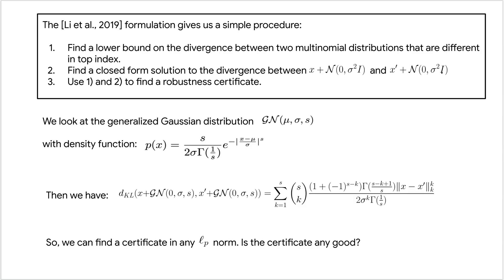In this work, we use the Li et al. approach to randomized smoothing that gives us a simple procedure to find robust guarantees. The simplified step-by-step procedure is as follows. First, find a lower bound on the divergence between two multinomial distributions that disagree in top index. Second, find a closed-form solution for the divergence between X with some Gaussian noise and X' with some Gaussian noise. Usually this can be expressed in terms of the L2 norm distance between X and X'. Then using steps 1 and 2, we can find a robustness certificate.